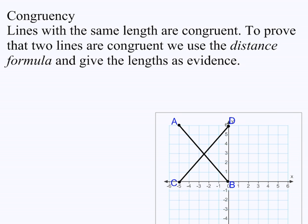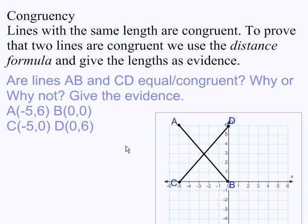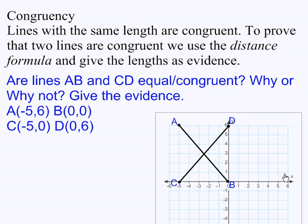Lines with the same length are congruent. To prove that two lines are congruent, we use the distance formula and give the lengths as evidence. So if we look at this question here: are lines AB and CD equal/congruent? Why or why not? Give the evidence.